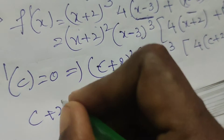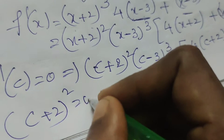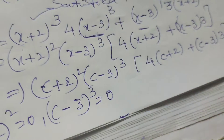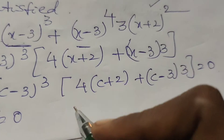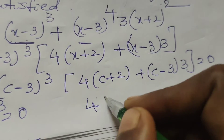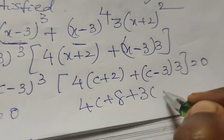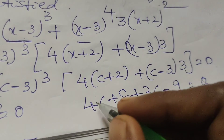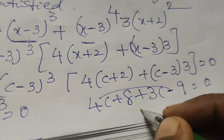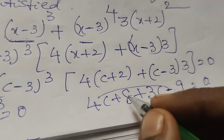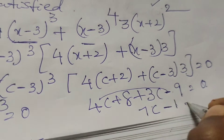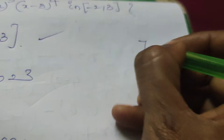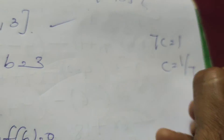From the bracket, simplifying: 4c + 8 + 3c - 9 = 0, which gives 7c - 1 = 0, so c = 1/7.